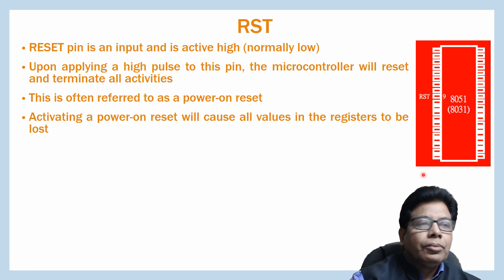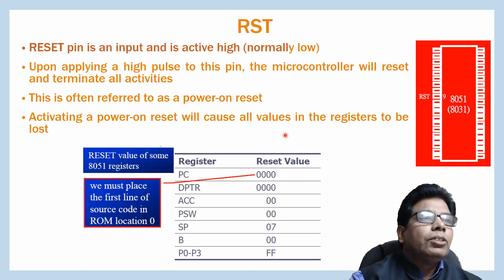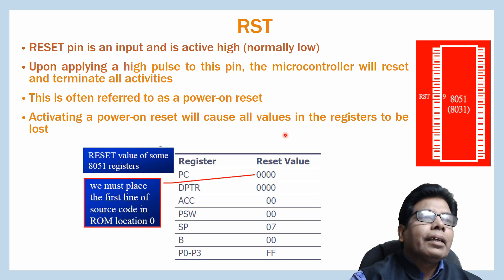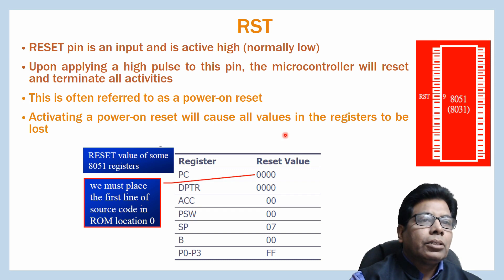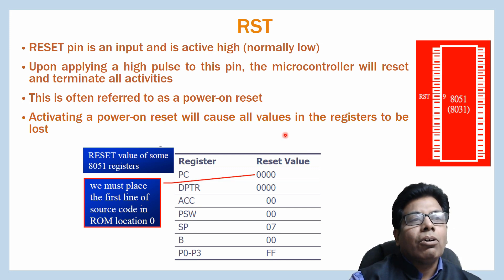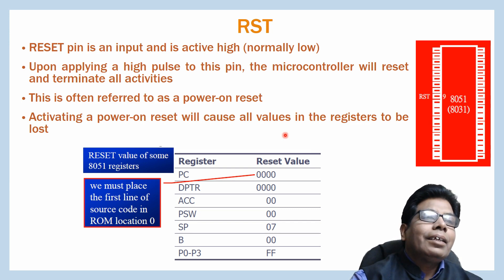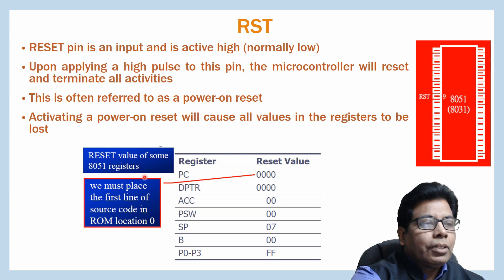Let us go to the next pin — that is the RST pin, pin number 9. The reset pin is an input and active high, normally low. Upon applying a high pulse to this pin, the microcontroller will reset and terminate all activities. It is used for resetting the microcontroller and is referred to as power on reset. Activating a power on reset will cause all the values in the registers to be lost.